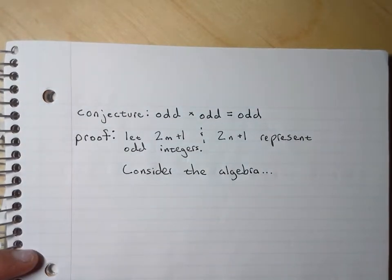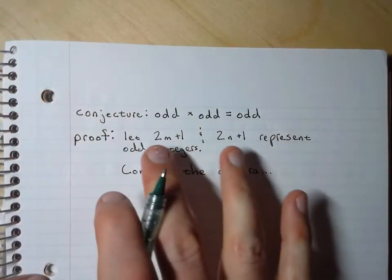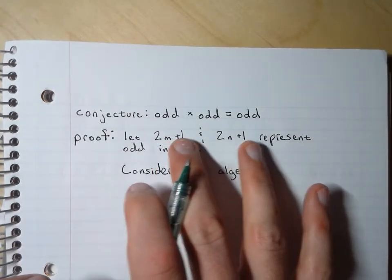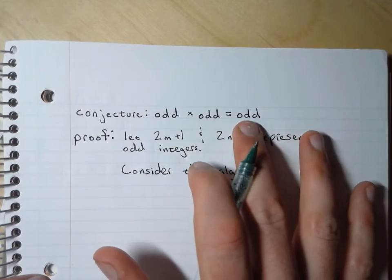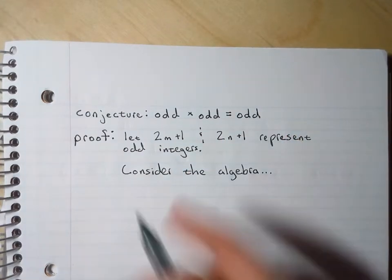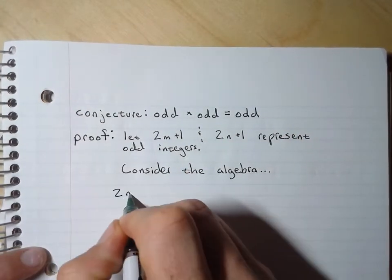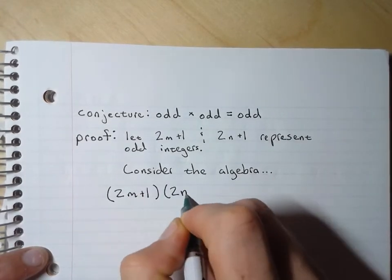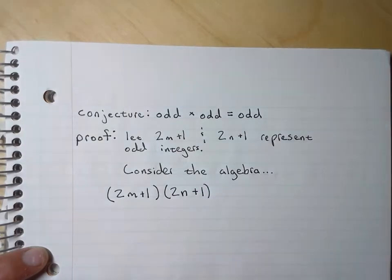So I'm going to show that the product of those two algebraic expressions can and always will result in a similar algebraic expression. So 2m plus 1 is one of my odd numbers times 2n plus 1 for my other odd number.